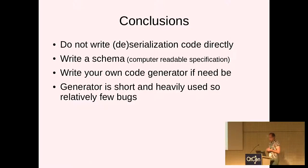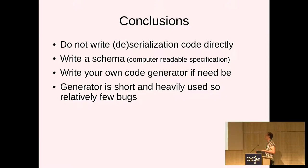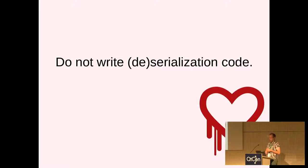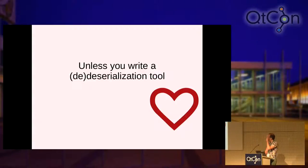We're at the end of the sermon, the screen held up — yay. Conclusions: you shouldn't write deserialization code directly. Write a schema instead, and then if you need to, write your own code generator, because then you can adapt your IO code very quickly, move fast, and have more secure code. The generator is short and heavily used, so there are not many bugs in it. In general it's a nicer way of working. It requires some setup at the start of your project, but when your project is meant to live longer, this is a much more maintainable way of working. So: do not write deserialization code — unless you write a deserialization tool.